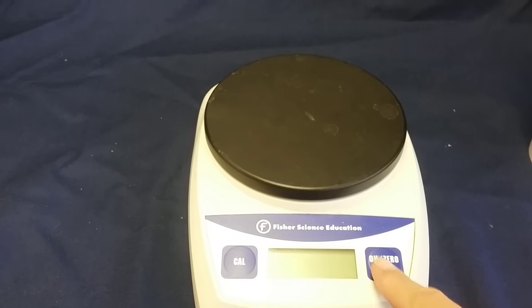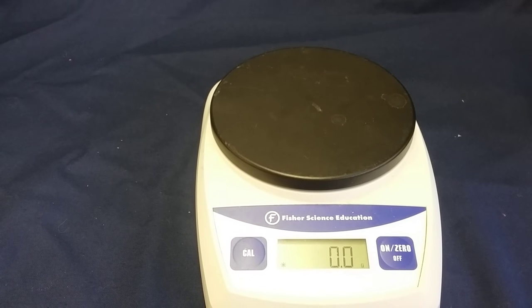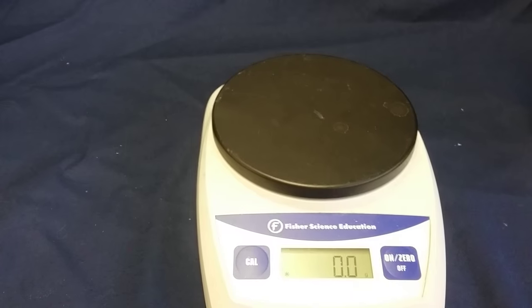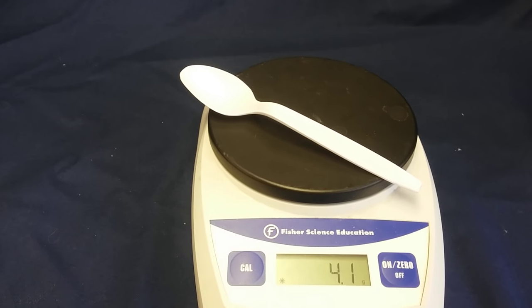When you come to your scale, press the on button and wait until you see a zero. Then place the object that you want to weigh on the tray. The spoon weighs 4.1 grams.